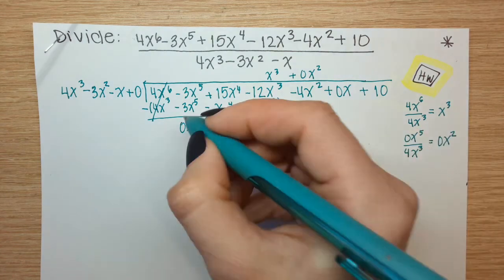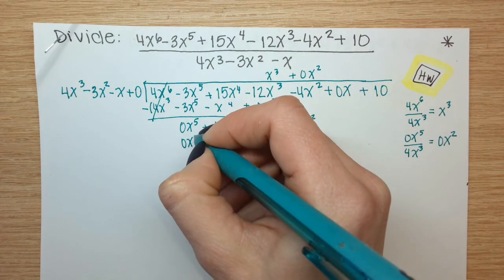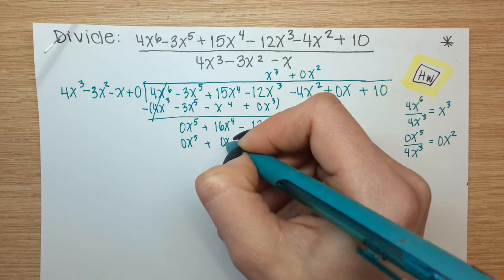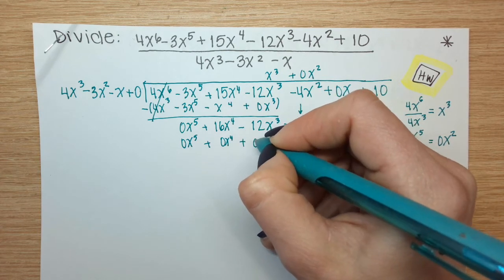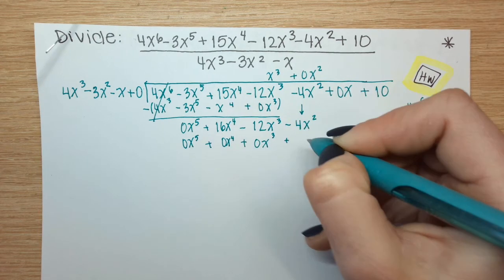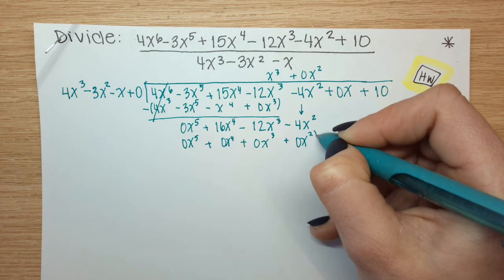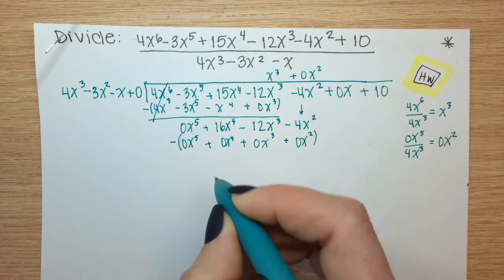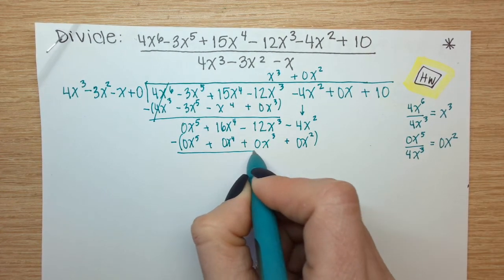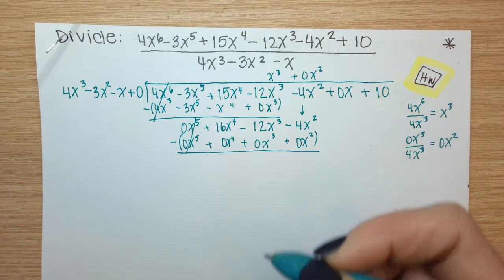0x everywhere. Parentheses, minus sign, underline, cancel.